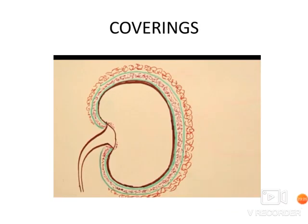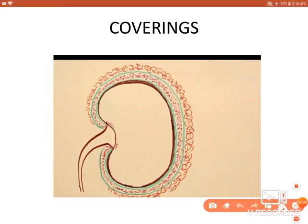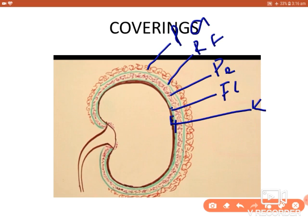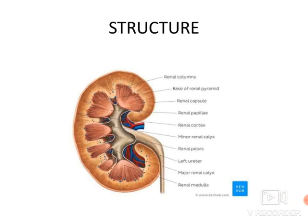To summarize the coverings of the kidney from inner to outer: fibrous capsule, perirenal fat, renal fascia, and pararenal fat.